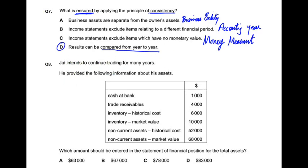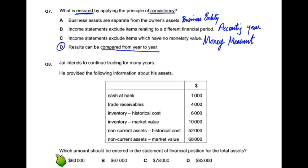Jay intends to continue trading for many years. He provided the following information about his assets: bank balance, trade receivables, inventory की 2 values दिविये और non-current assets की भी 2 values दिविये। Which amount should be entered in the statement of financial position for total assets? Cash at bank की value 1000 एक ही दिविये — वही ले लेंगे।